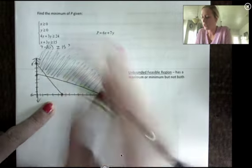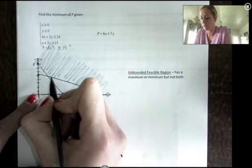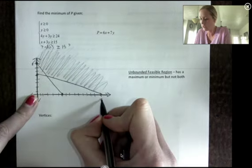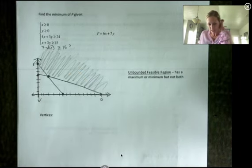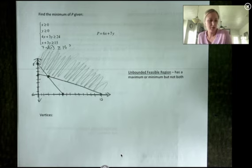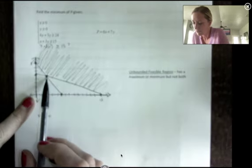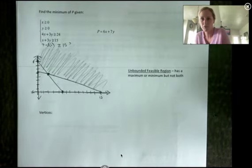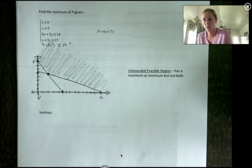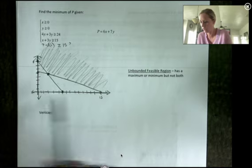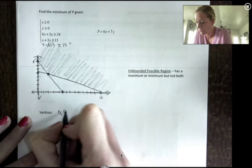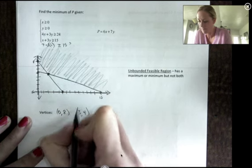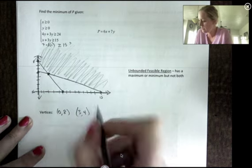So my vertices then that kind of bound this feasible region are this intercept of 8, this intercept of 15, and this intersection point. Okay and we need to find those vertices and plug them in so here you can kind of see my point is at 3, 4. My graph isn't super accurate so if you have a nice grid you can make sure that those are your lines line up with your grid lines perfectly. Mine aren't super evenly spaced but my vertices are 0, 8, 3, 4, and 15, 0 this intercept.